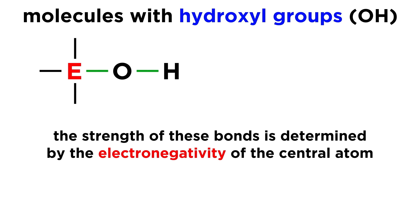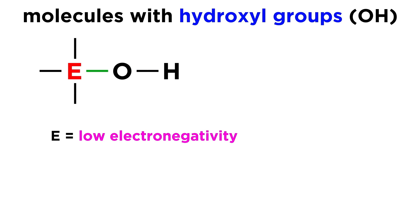This depends on the strength of these bonds, which is determined by the electronegativity of the central atom. If it has a low electronegativity, it will not hang on to the electrons in this bond very well. That bond will break, resulting in hydroxide ions, which means the compound was a base.